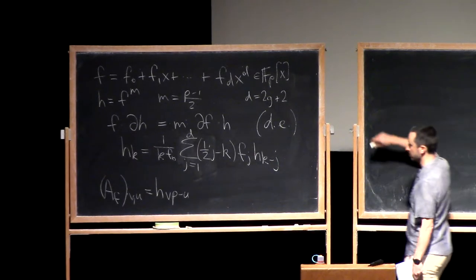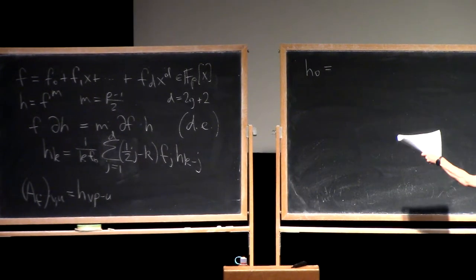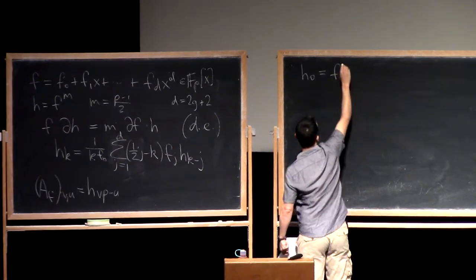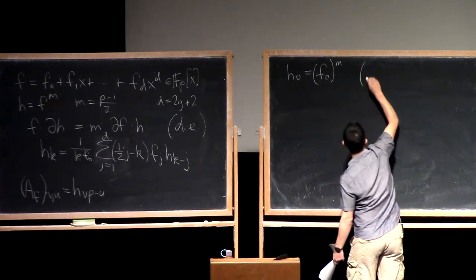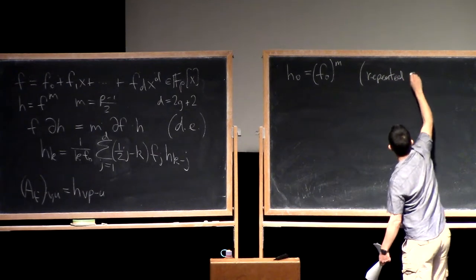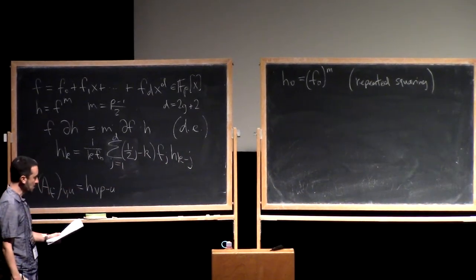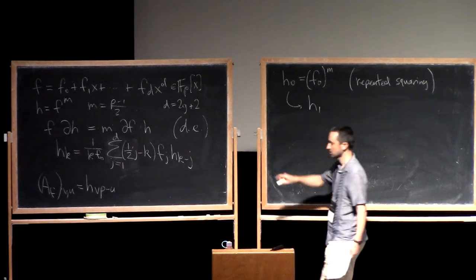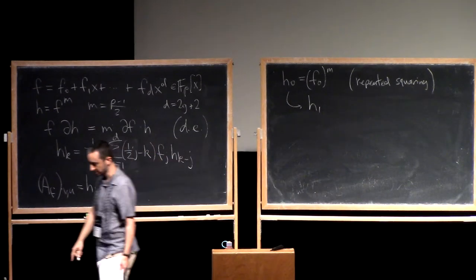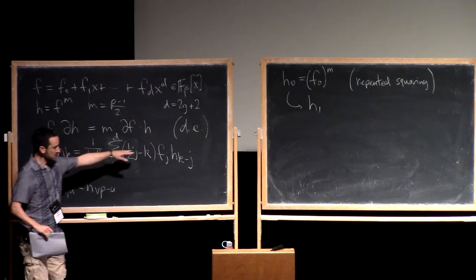We start with h_0, which is easy to compute — it's just the constant term, so I compute the m-th power of f_0 using repeated squaring, also called binary powering. Then I compute h_1 using the recurrence. There was a question in the problem session: what about h with negative indices? h of minus 1 is 0 — all the negative indices are 0, by convention, and you can also prove that's what they have to be.